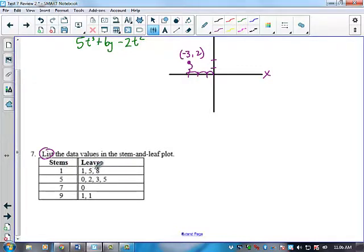Make sure that you list every single one. So I would have 11, 15, 18, and then I go to the next one, which is 50, 52, 53, all the way through.